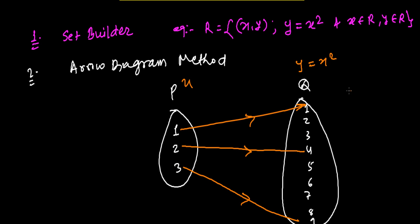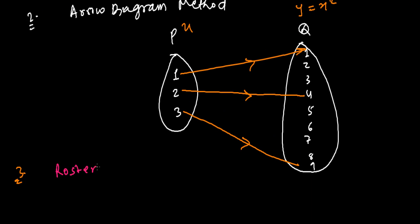And the next method is roster method. In this, we simply write our relationship in an ordered pair form as a set.